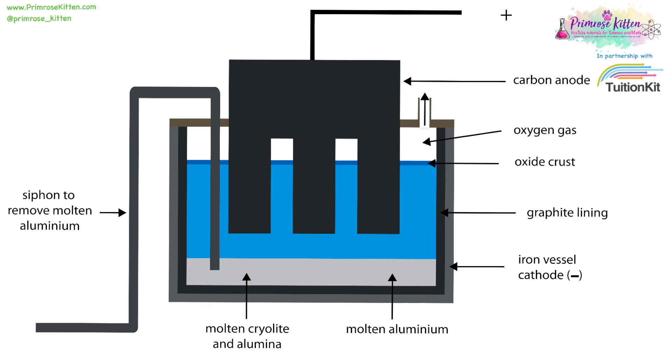At the cathode, the negative electrode, we are going to have aluminum ions. They are going to be picking up electrons and turning into aluminum atoms.